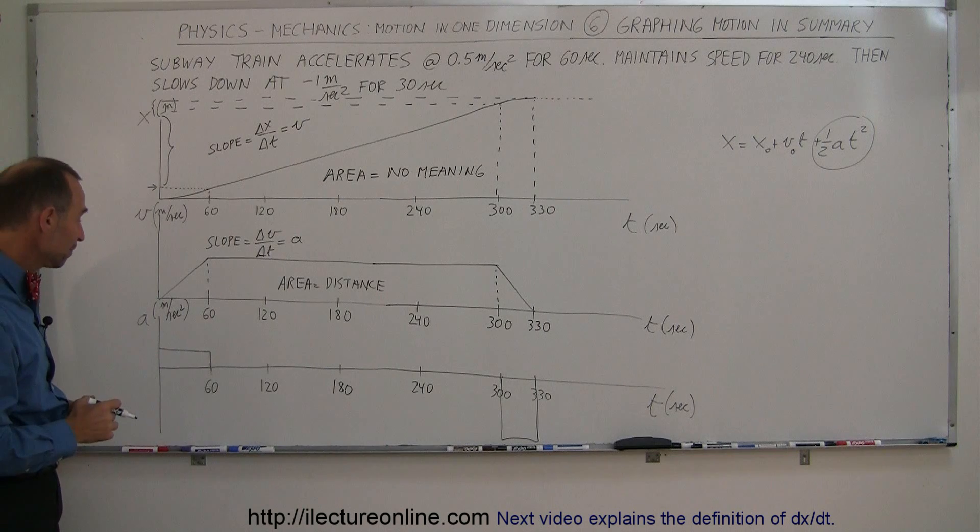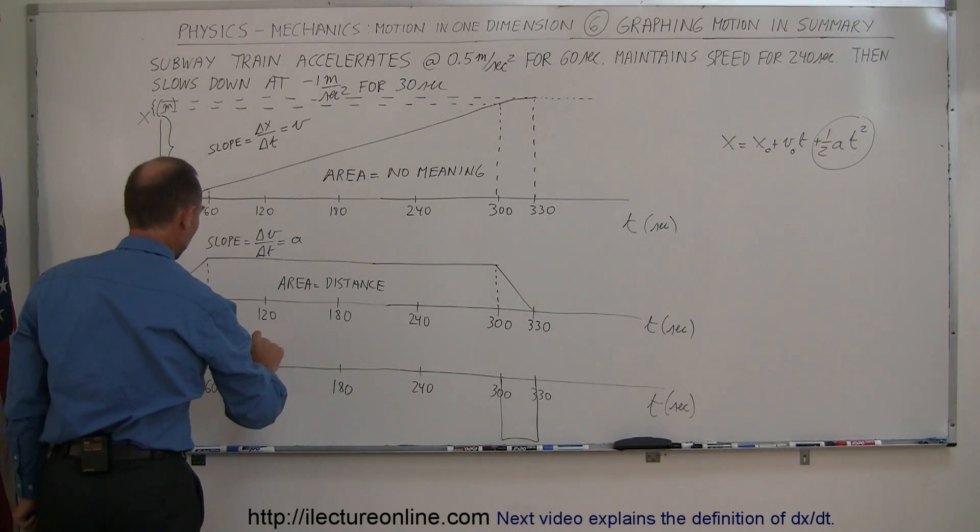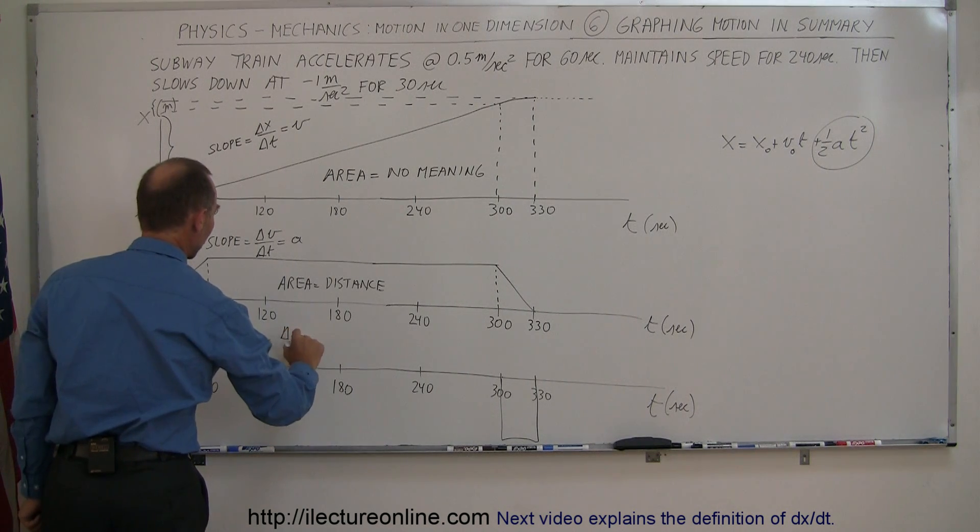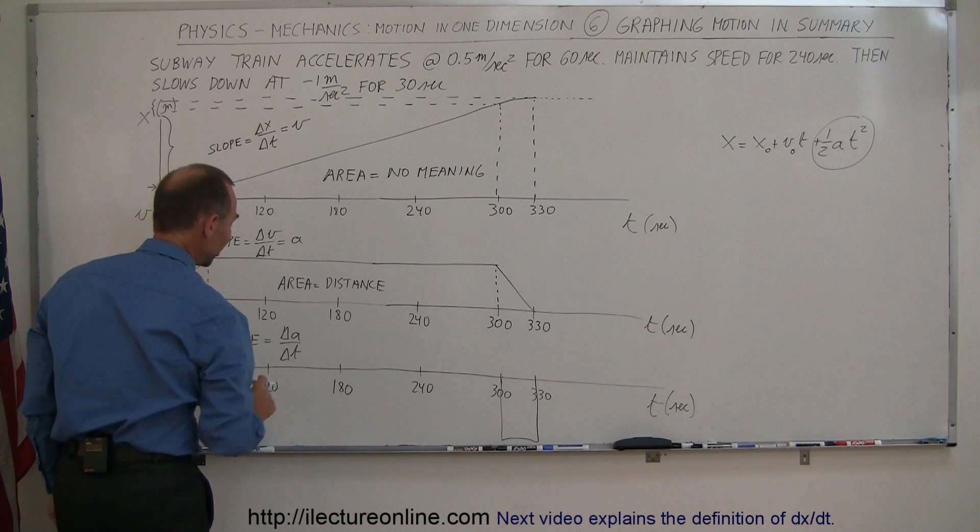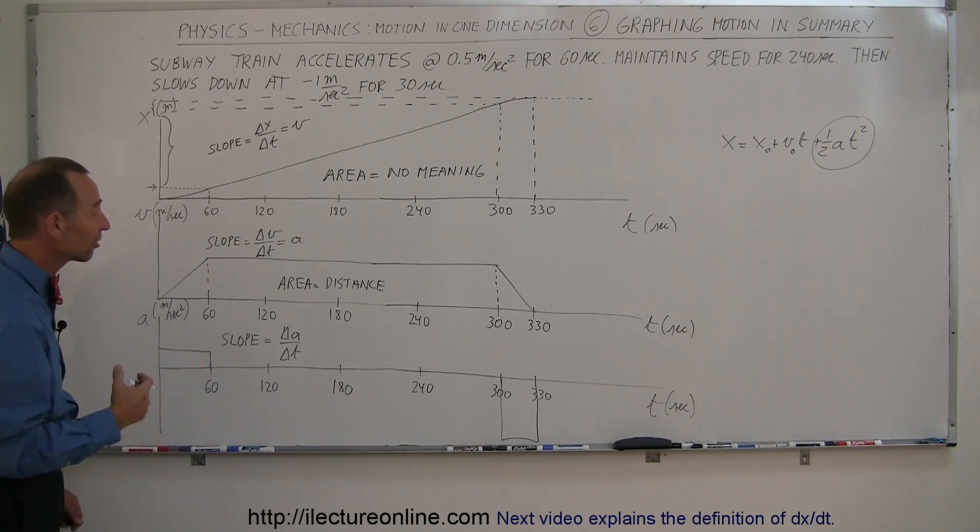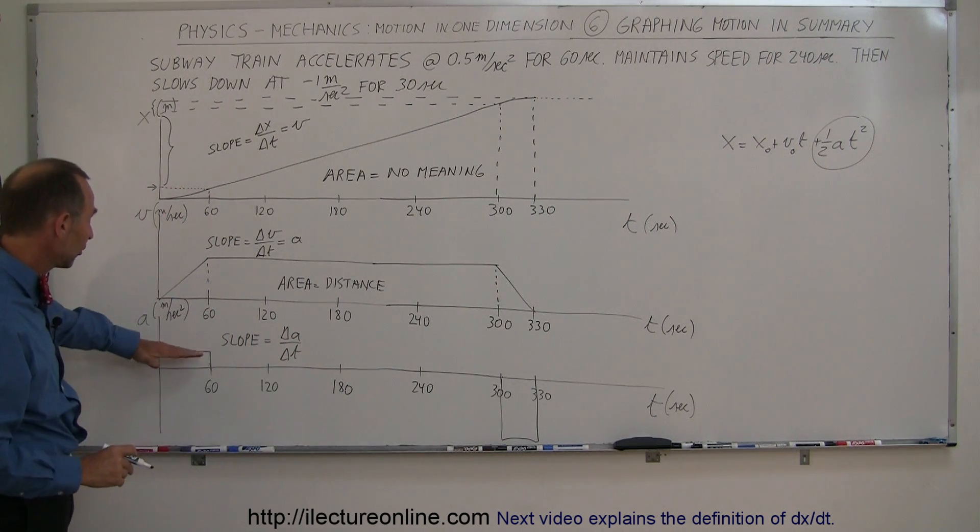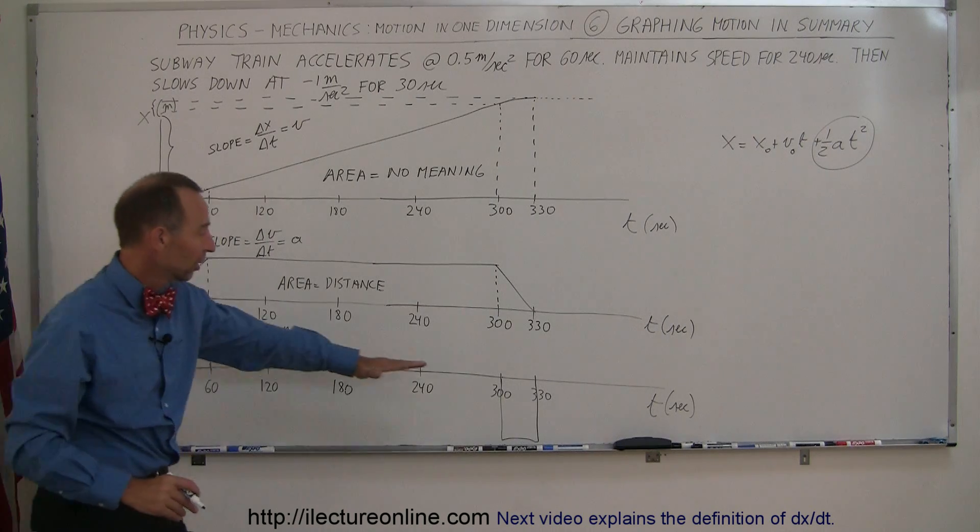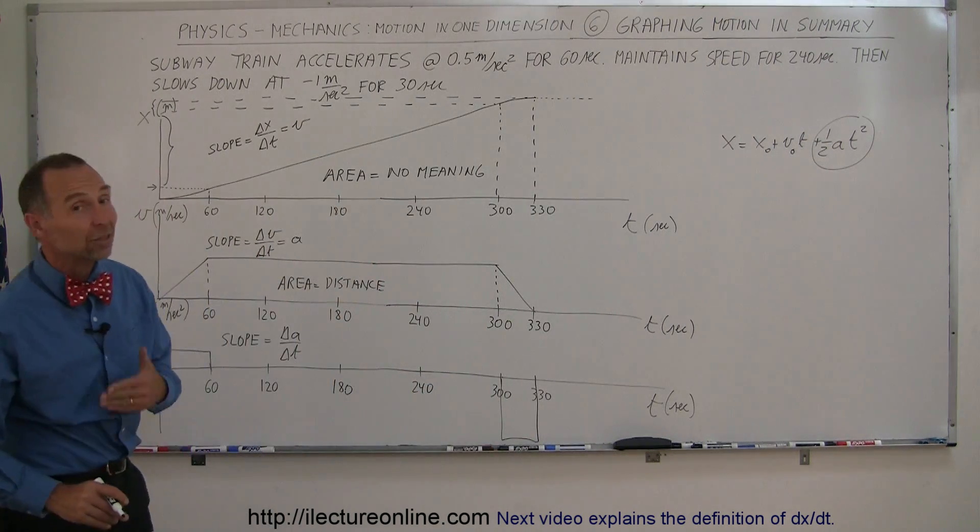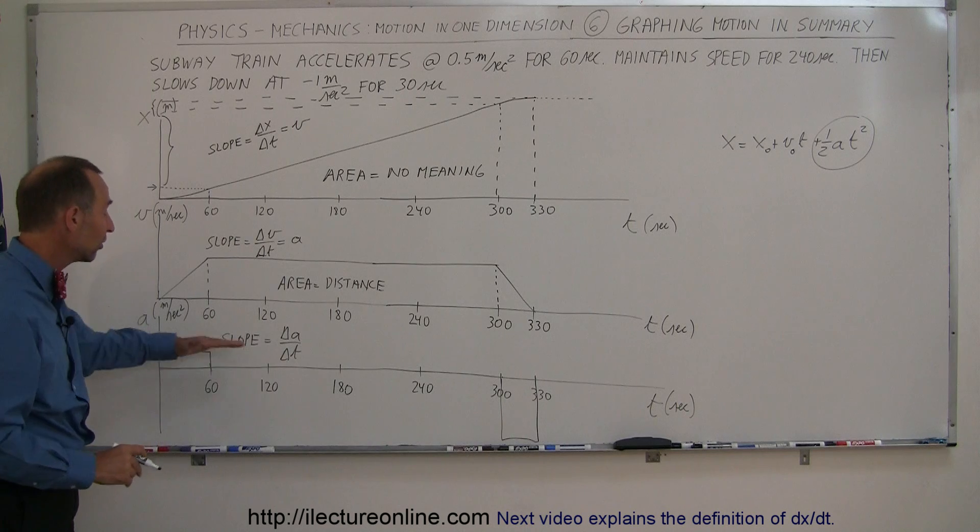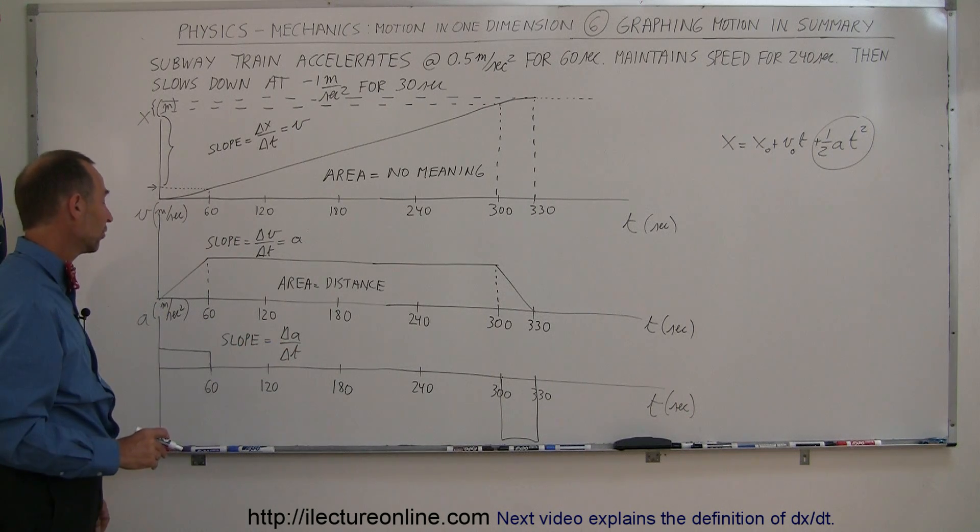Finally, acceleration versus time. The slope represents the change in acceleration over time, which is simply the derivative of acceleration, how fast acceleration is changing. Notice that the slope here is zero, the slope is zero, the slope is zero here, meaning the acceleration doesn't change. It's constant in those three instances.